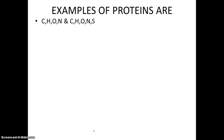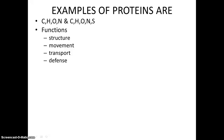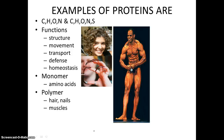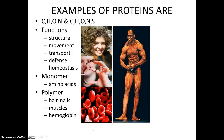Examples of proteins and their functions include: structure, movement, transport, defense, and homeostasis. When we say homeostasis, we mean enzymes regulating all these chemical reactions, signal proteins like hormones, and they are a major part of our structure — like hair, nails, muscles — and part of our cells, like hemoglobin, which is a transport protein.